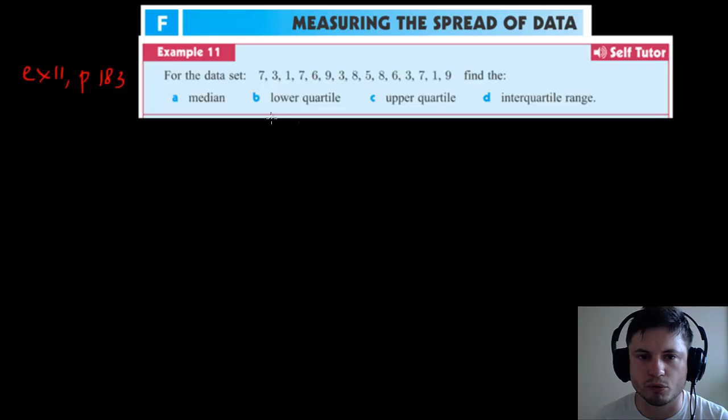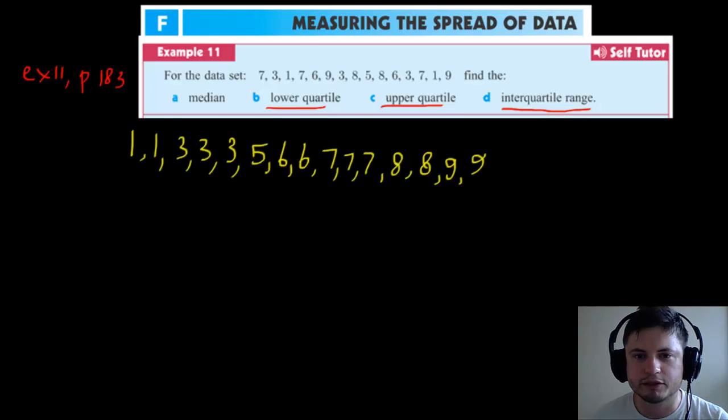To find it, we need to rewrite these numbers in order first. These are the same numbers written in order. We know that to find the median, we look for the (n+1)/2 position. Let's do it right now. There are 15 numbers. 15 + 1 = 16, divided by 2 gives